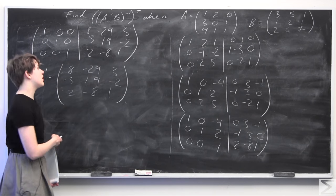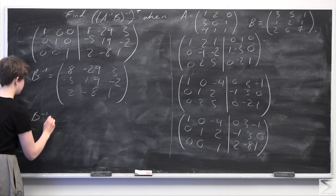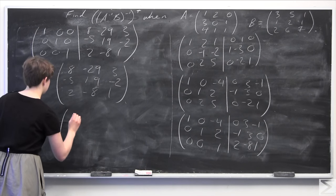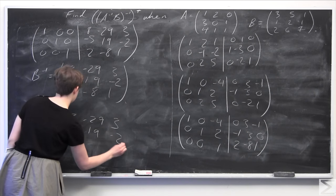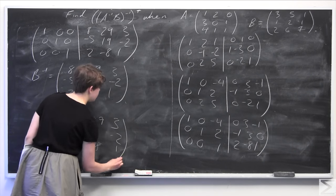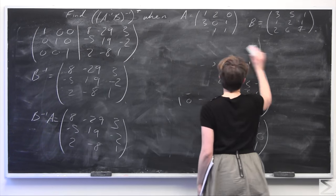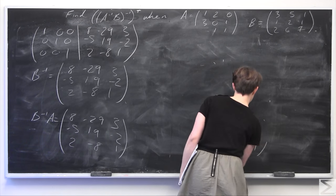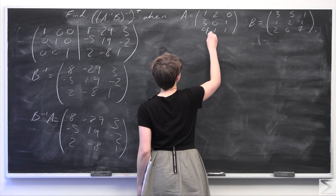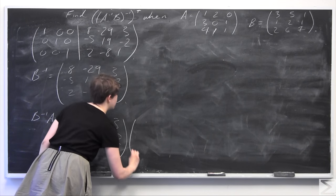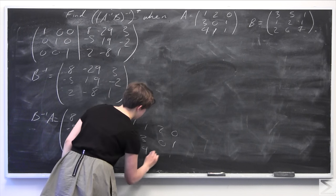Now, if you recall, we need to multiply B inverse by A and then take the transpose. We multiply B inverse times A. B inverse is [8, -29, 3 / -5, 19, -2 / 2, -8, 1] and A is [1, 2, 0 / 3, 0, 1 / 4, 1, 1]. These are both 3×3 matrices so the result is also a 3×3 matrix.